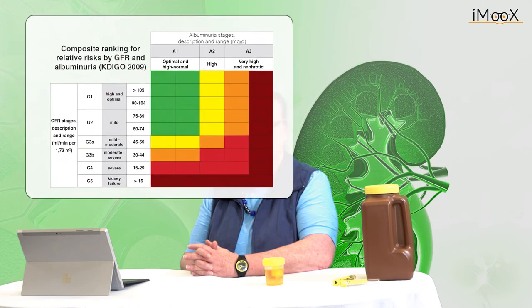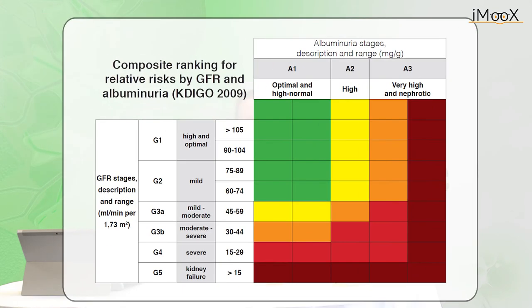KDIGO, which means Kidney Disease Improving Global Outcomes, is a global non-profit organization which develops and implements evidence-based clinical practice guidelines in kidney disease. The KDIGO system is based upon the eGFR revealed by the CKD-EPI formula and includes albuminuria in the staging.